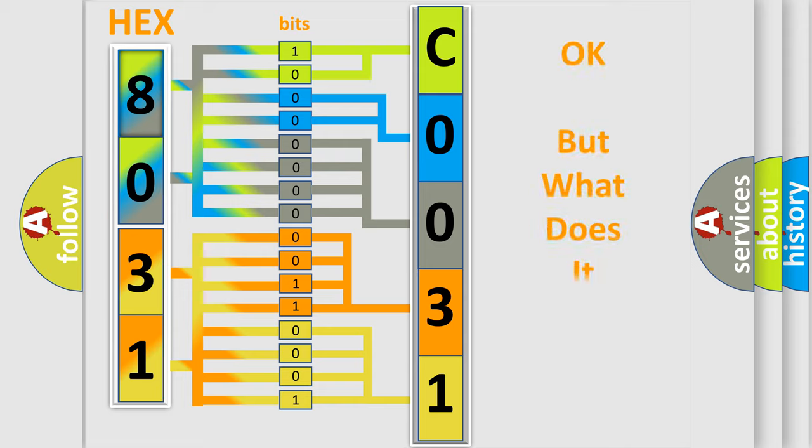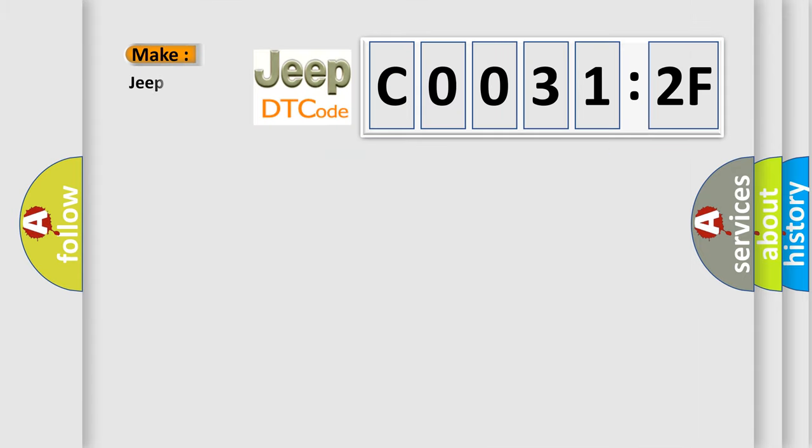We now know in what way the diagnostic tool translates the received information into a more comprehensible format. The number itself does not make sense to us if we cannot assign information about what it actually expresses. So, what does the diagnostic trouble code CO0312F interpret specifically for Jeep car manufacturers?